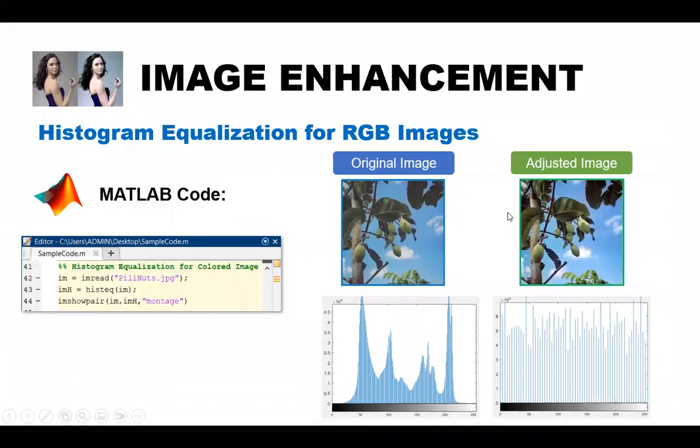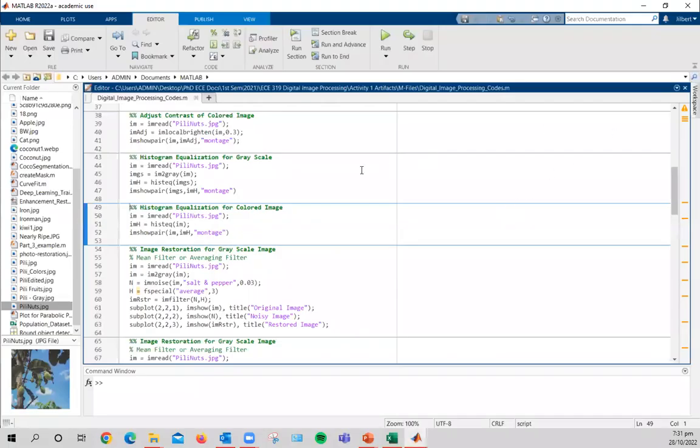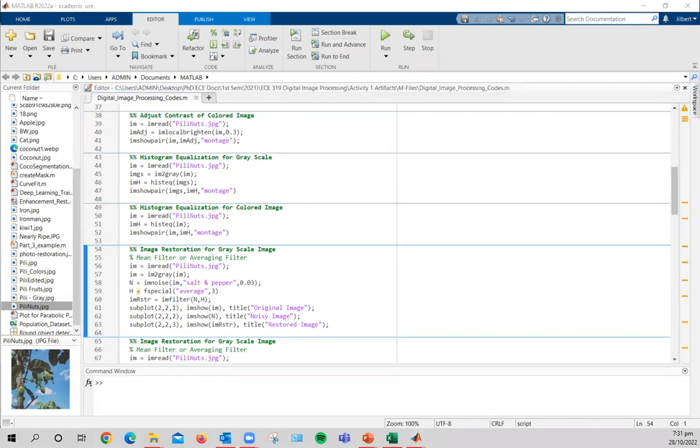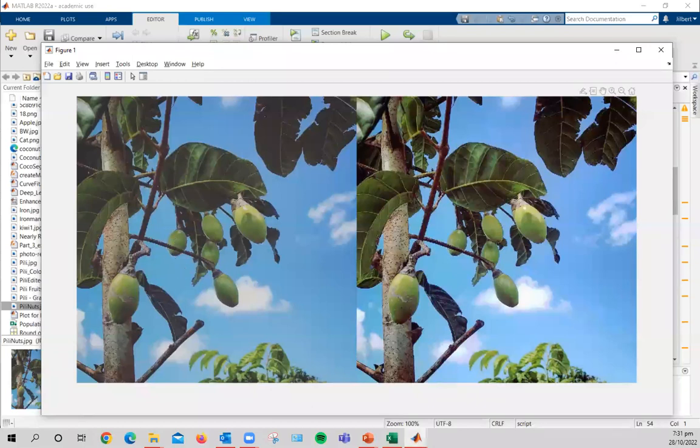All right. So we also have here another example of histogram equalization program. But this time, this is for RGB images. And at the bottom of the image, you will also see the transformed histogram of the output image for comparison with the original histogram. Let's check the code in MATLAB to see the actual execution of the command. And this is how it looks like.